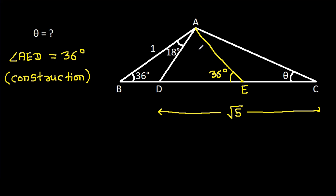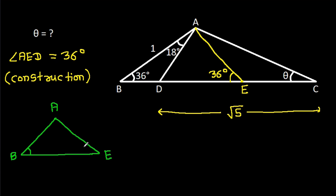Then in triangle ABE, these two angles are equal, that is 36 degrees. So AB will be equal to AE, and AB is 1, so AE will be 1.